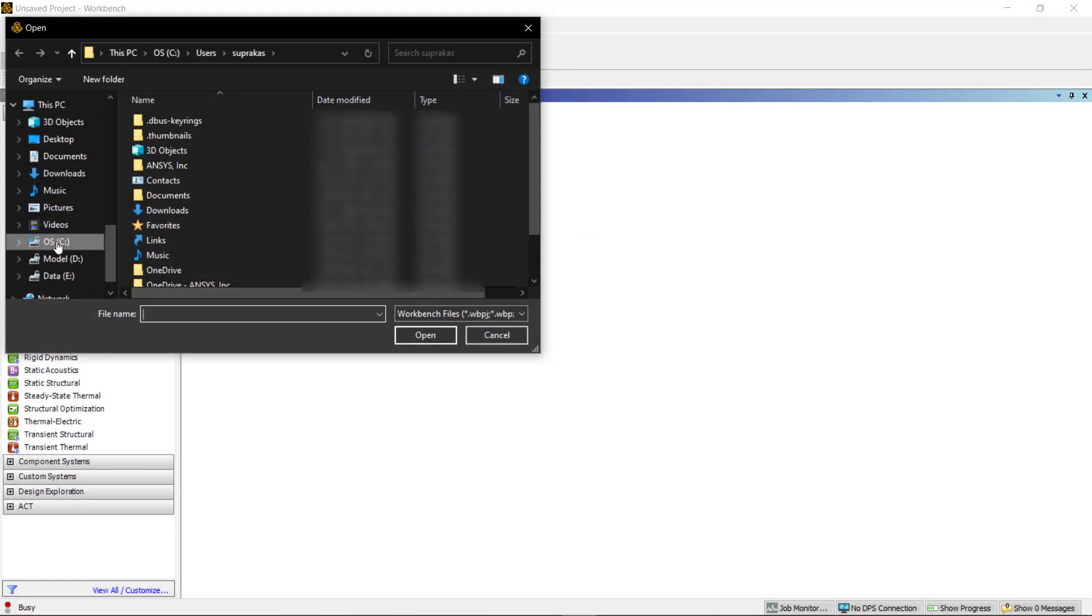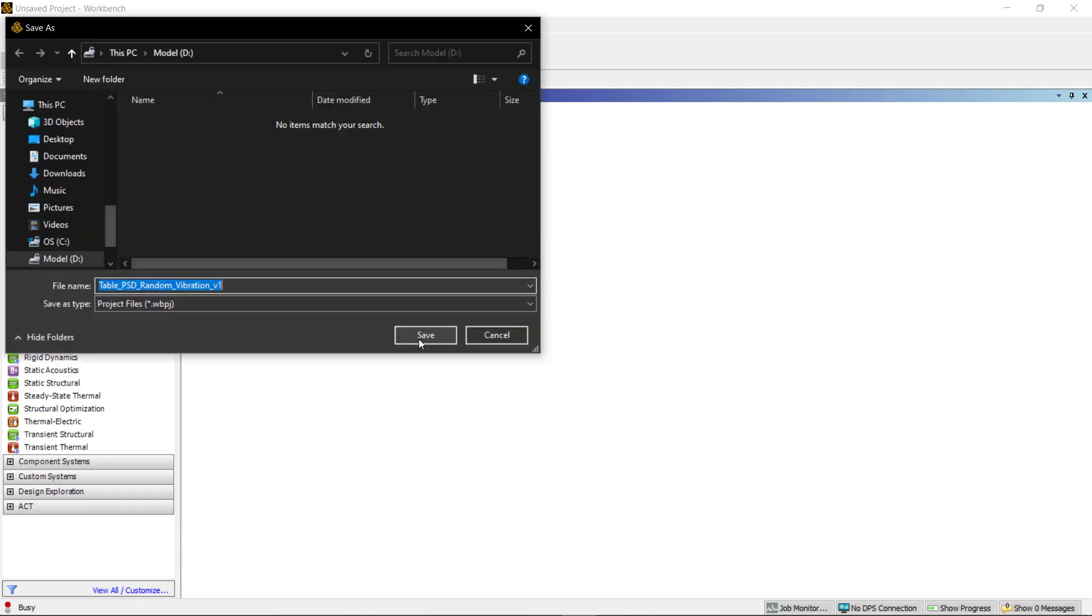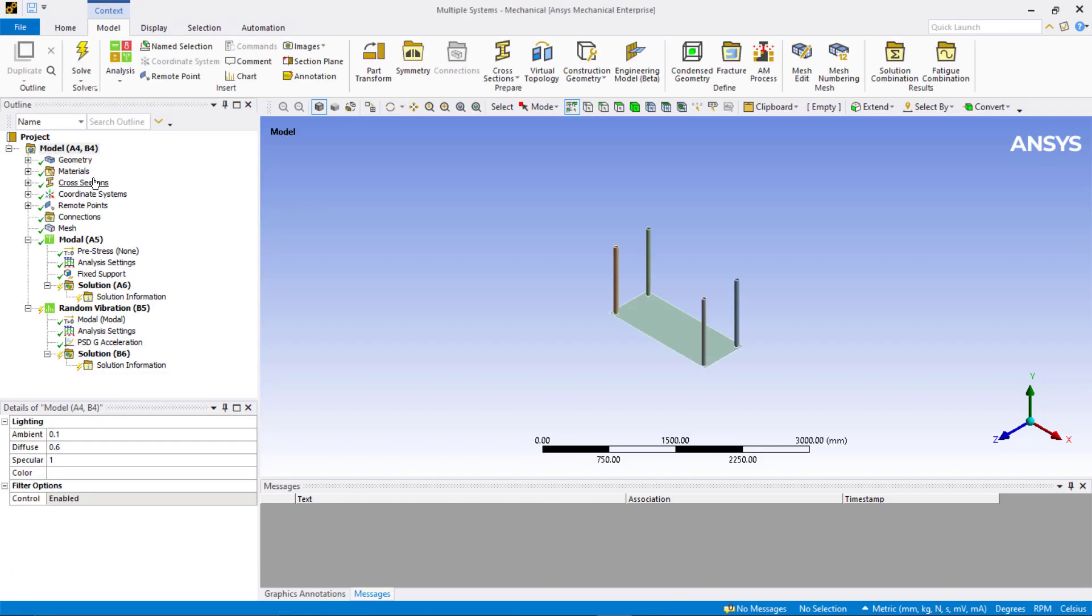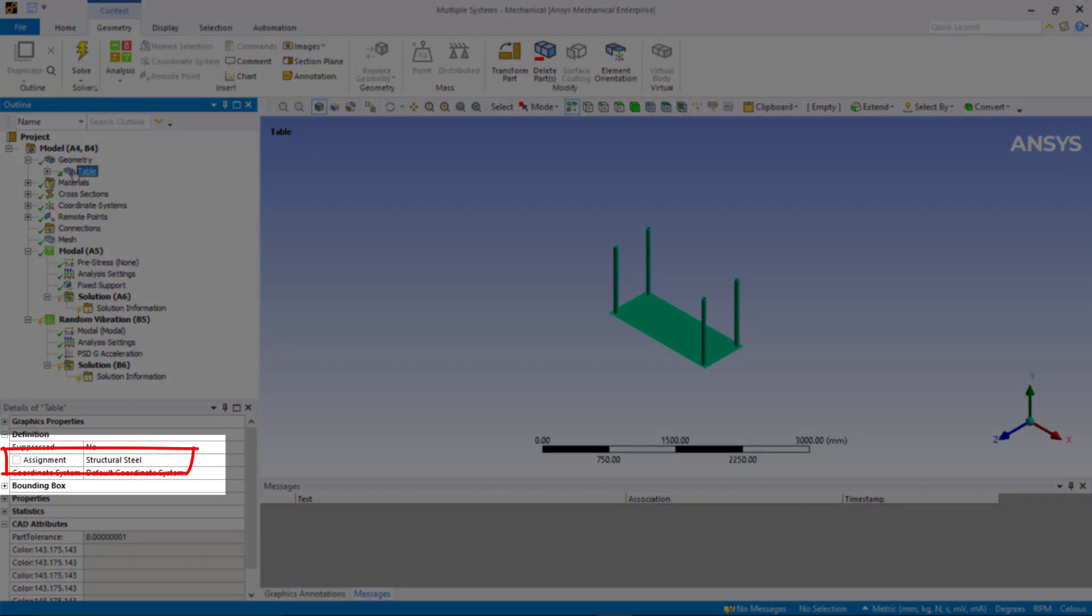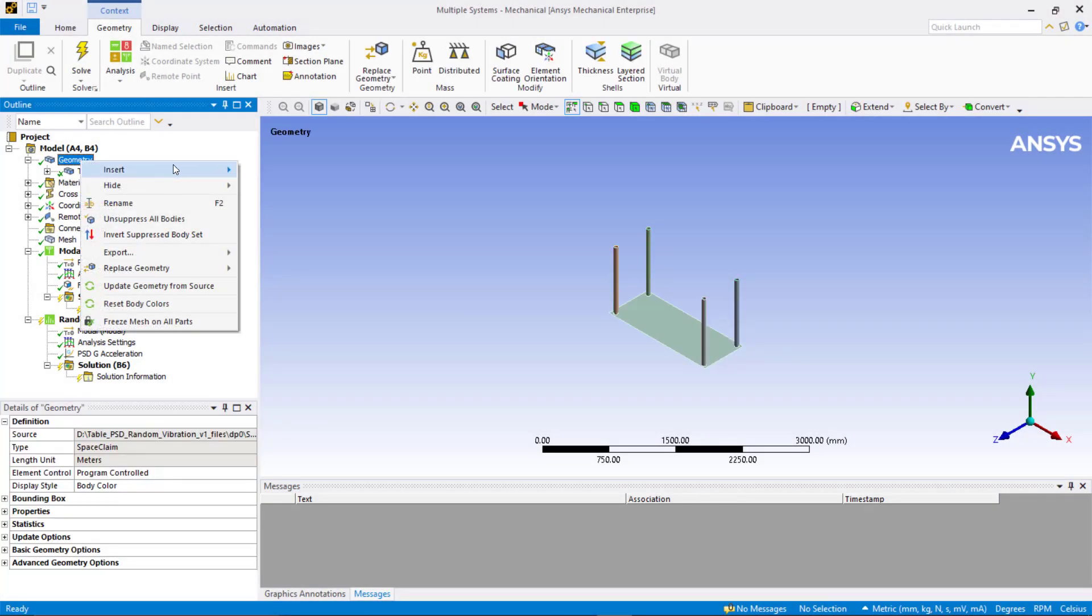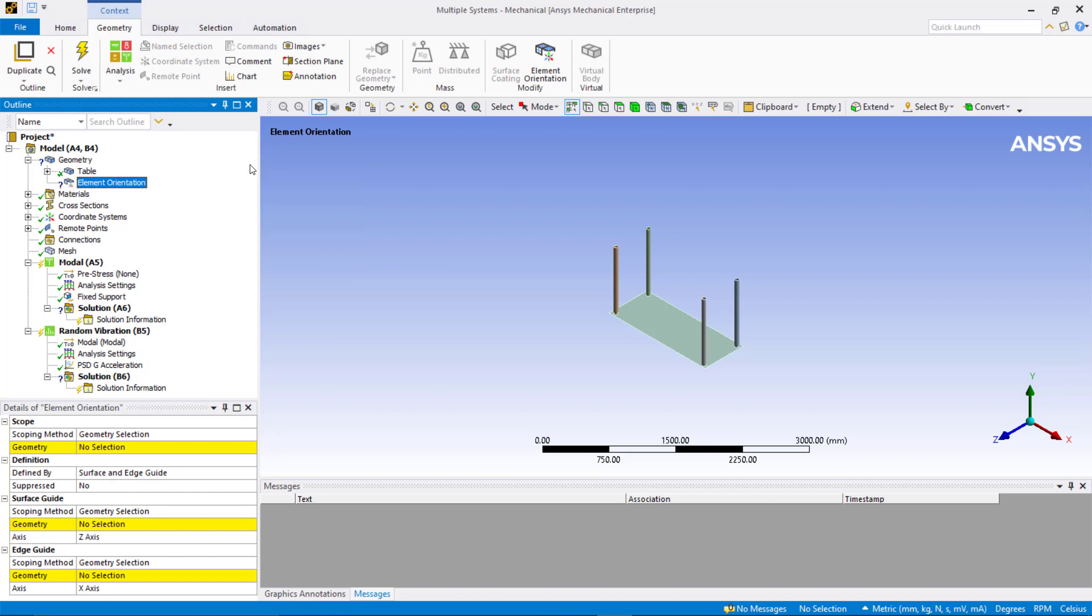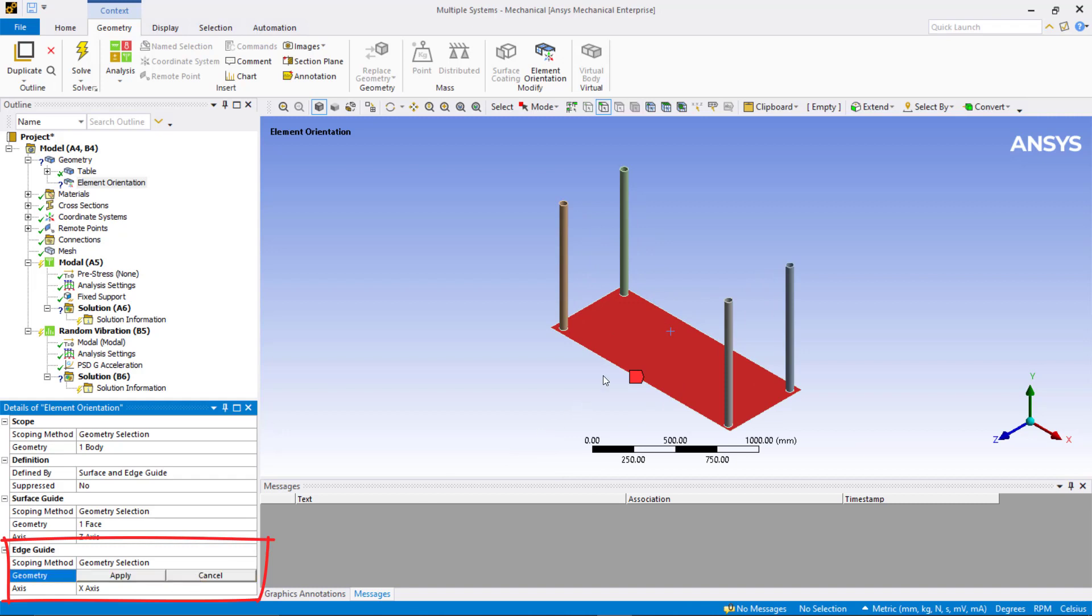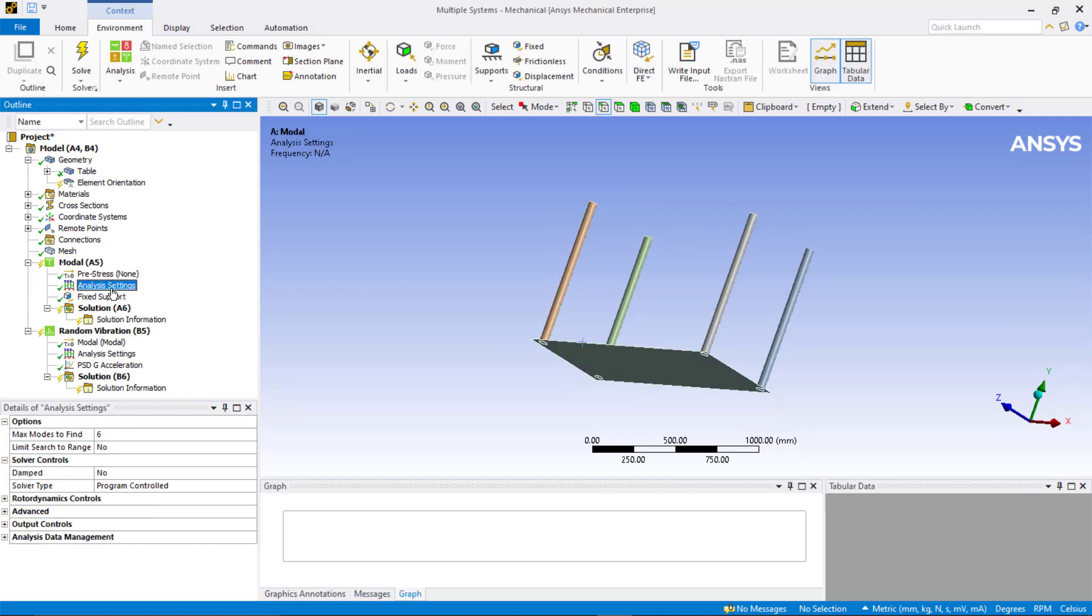Open WBPZ file table PSD random vibration that has predefined random vibration analysis workflow on the project page and predefined modal analysis in Mechanical. Open Mechanical. The table is made of structural steel and we will not change the material assignment. Insert element orientation to make sure the element x-axis is aligned with the solution coordinate system since we would like to post-process the results in x direction later. Under surface guide select the table top face and apply under geometry. Set axis to z. Under edge guide select the longer edge of the table and apply under geometry. Set axis to x.